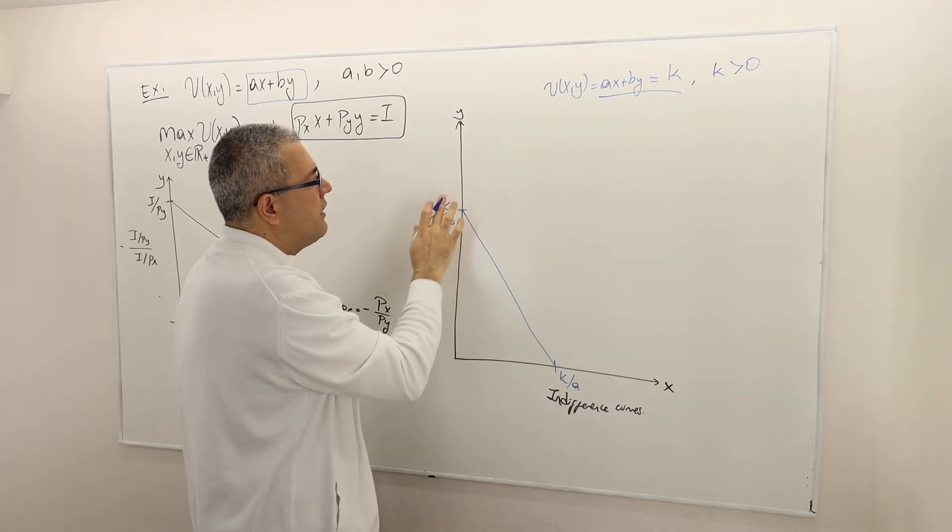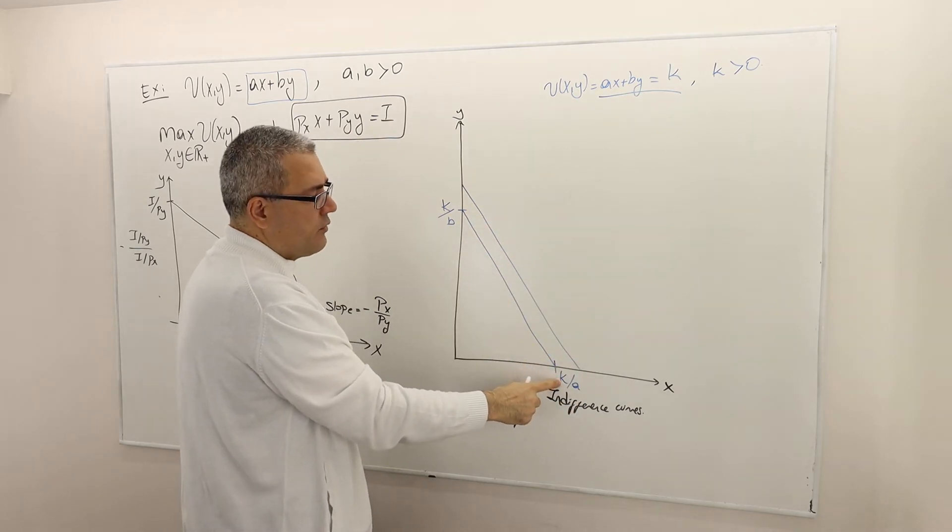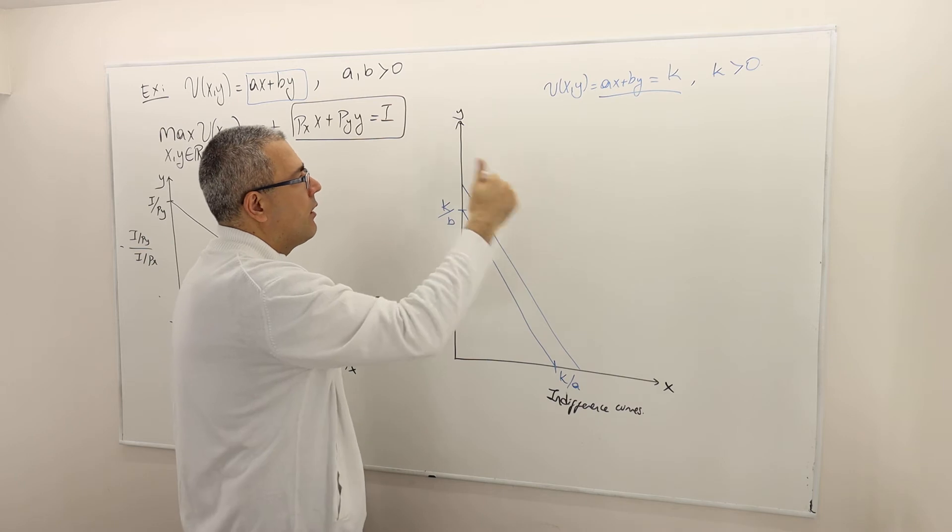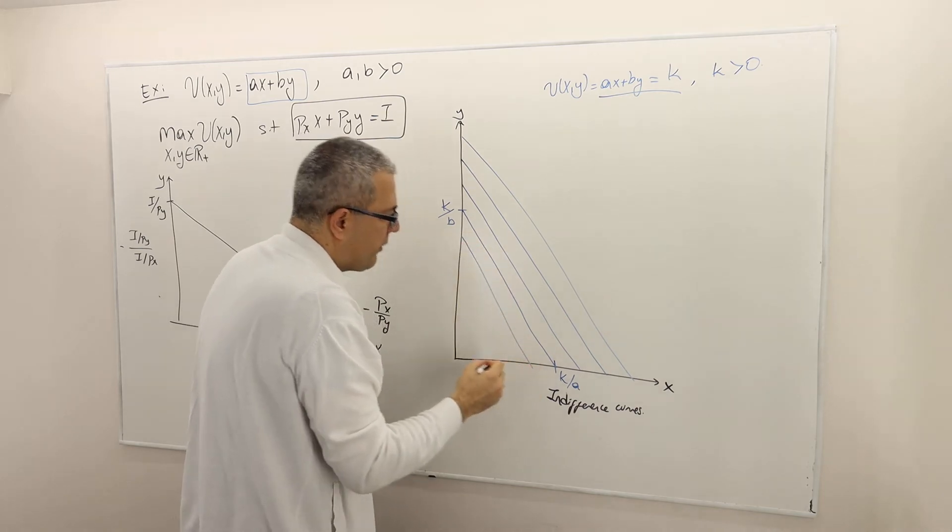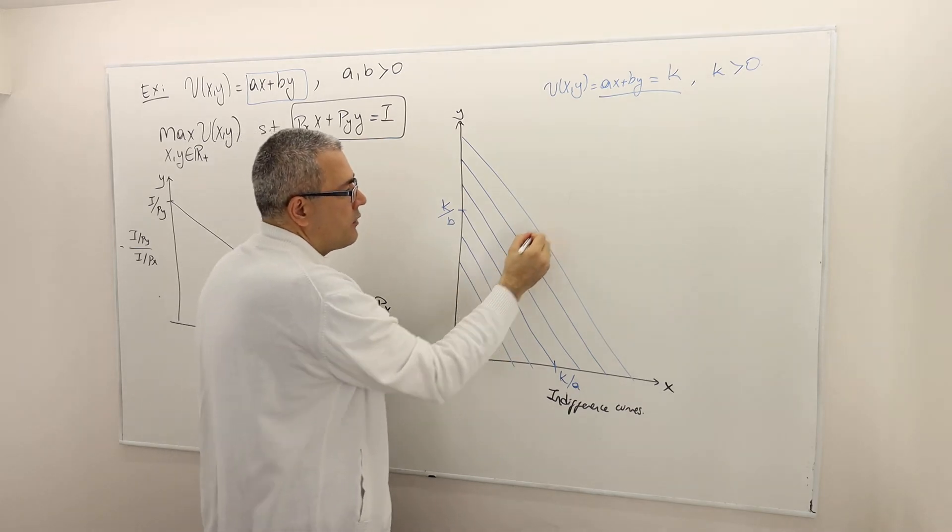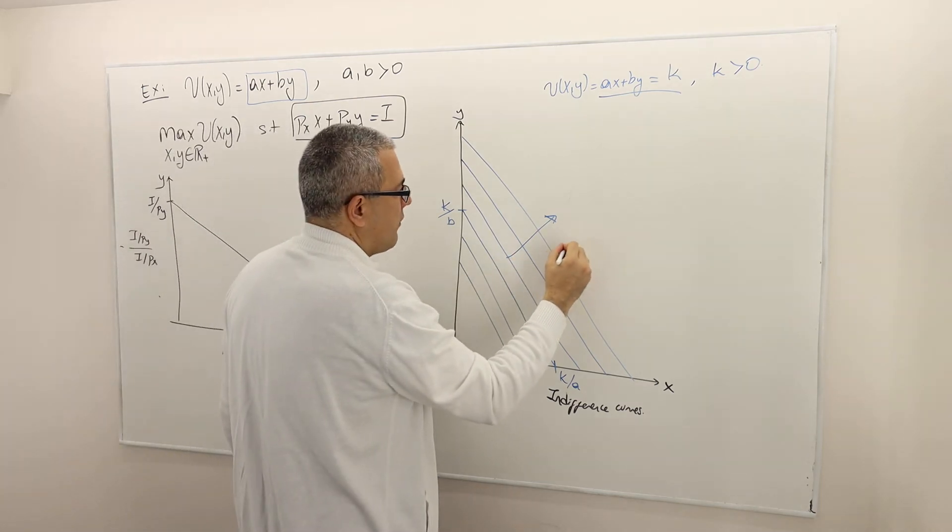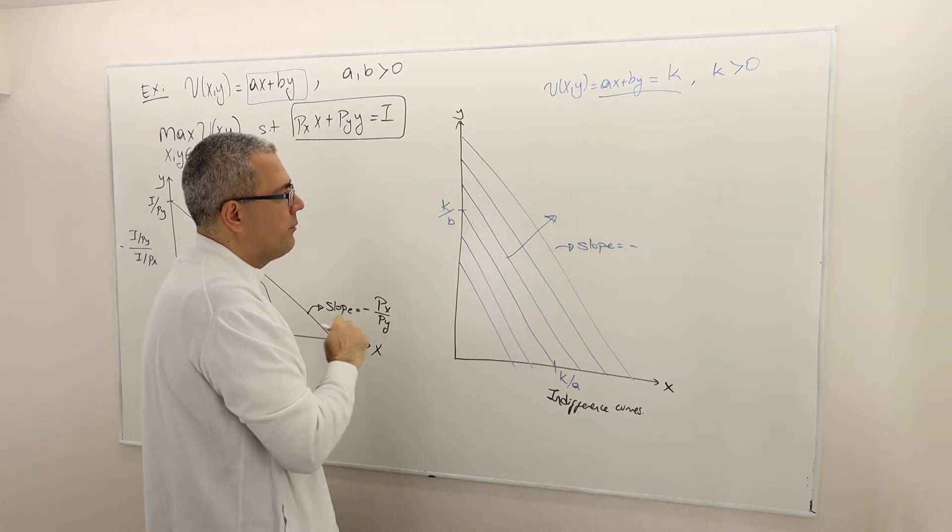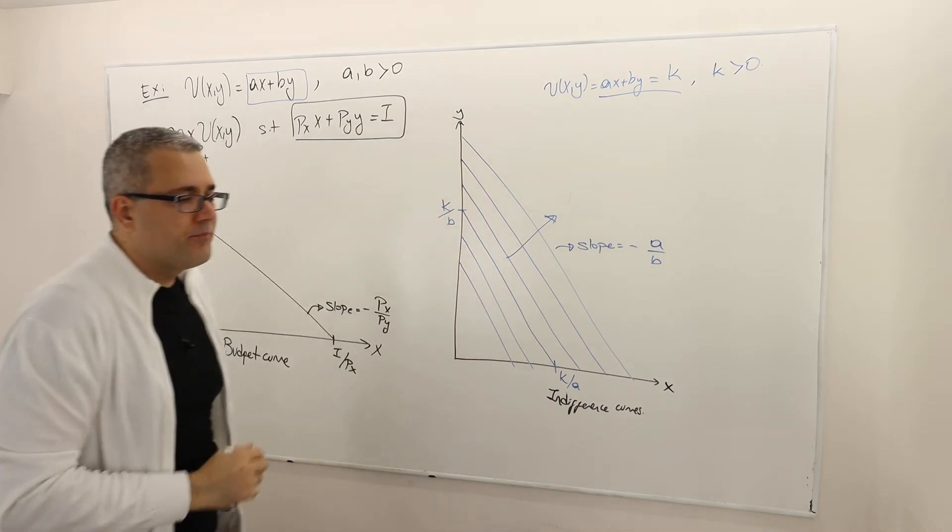As you increase the K, you get another indifference curve. For example, if K equals 2, it's 2 over A and 2 over B. If K equals 3, it's 3 over B and 3 over A, and so on. Therefore all the indifference curves will be parallel to each other. As we move in this direction, that means higher utility. The important thing is the slope of the indifference curve: it's minus K over B divided by K over A, so it's basically A over B.